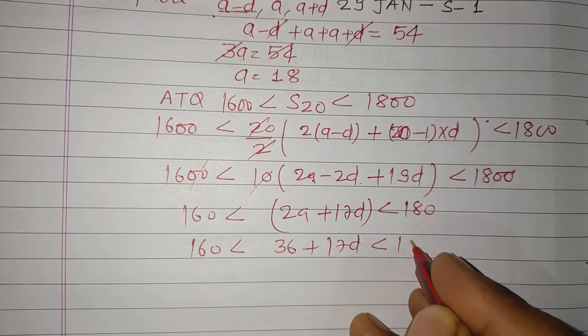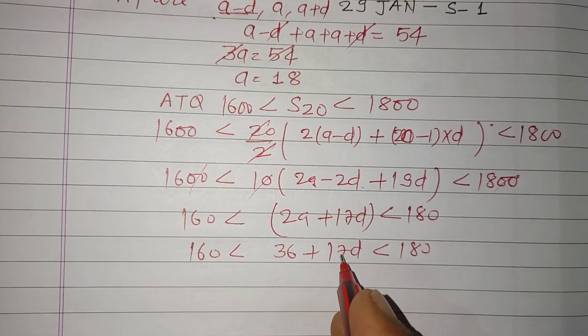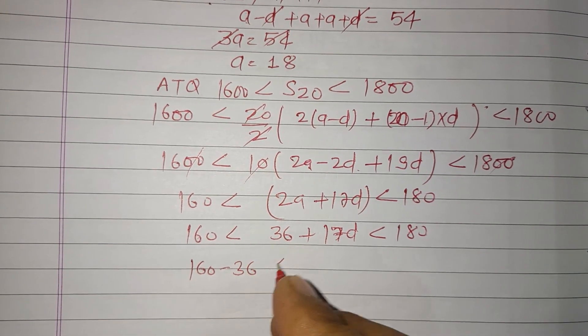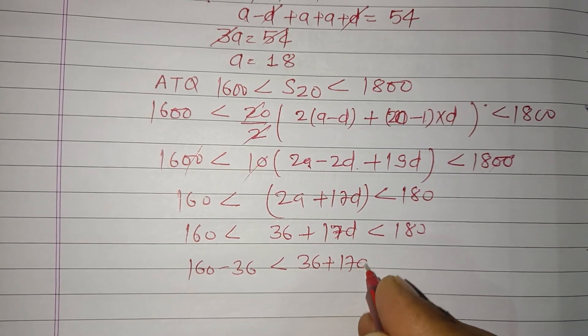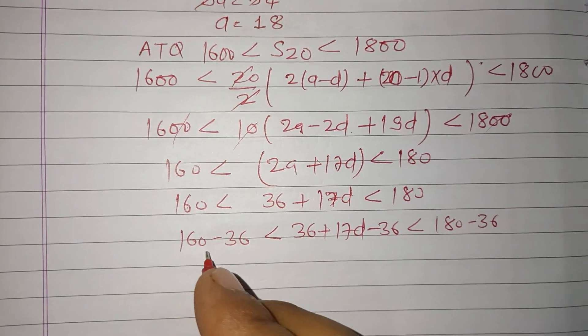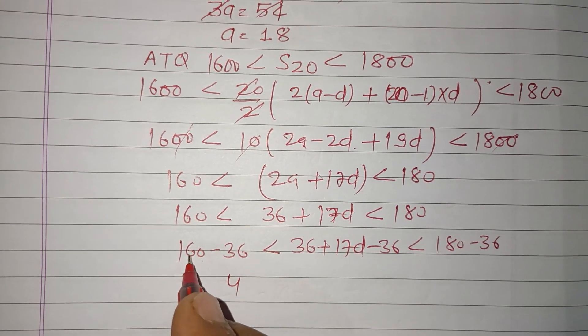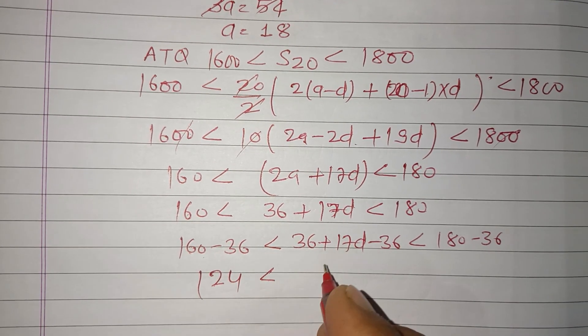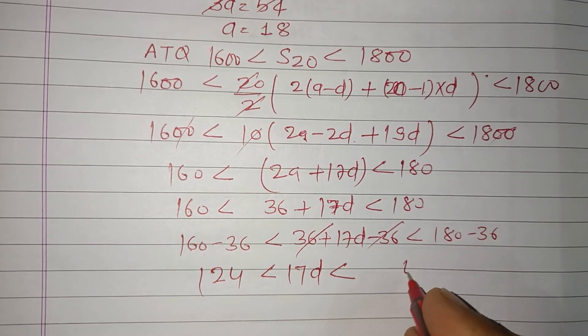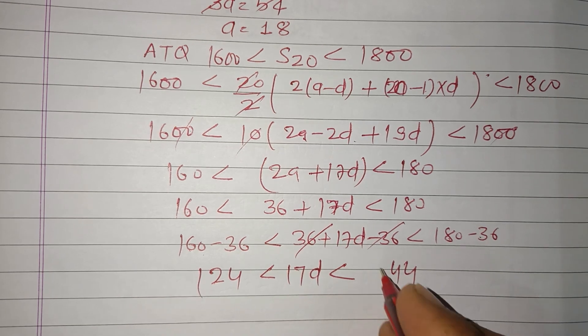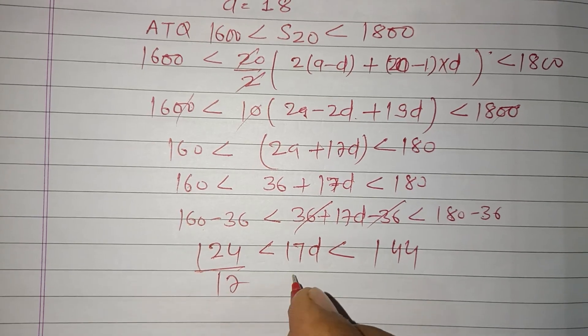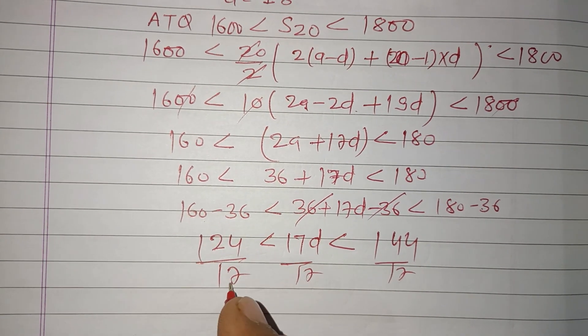Now we subtract 36 in all sides. So 160 minus 36, 36 plus 17D minus 36, 180 minus 36. So we got here 124, and this cancels, 17D less than 144. Now if we divide both sides by 17.